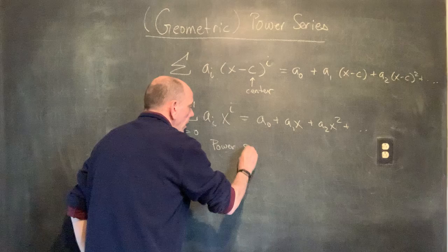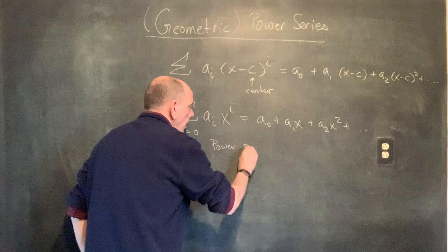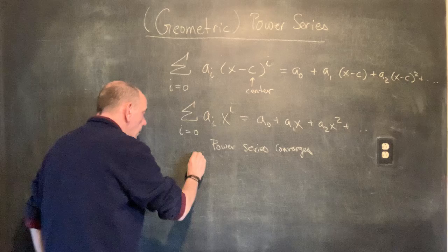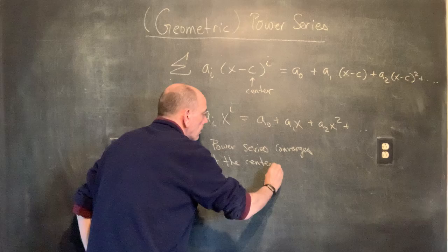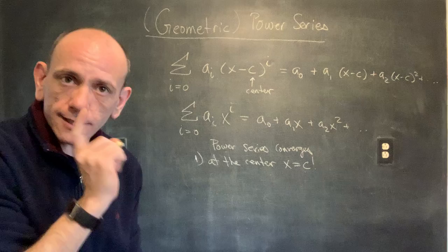A power series converges, first of all, at the center, x equals c — always, always, always. It'll converge at least at that one point.